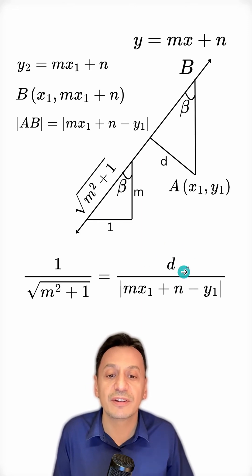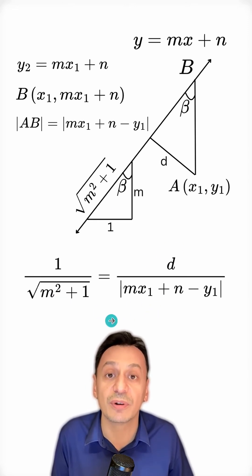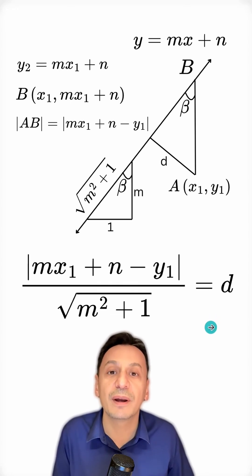Now to find the distance, I move this value to the other side of the equation as multiplication. This way, we've found the distance.